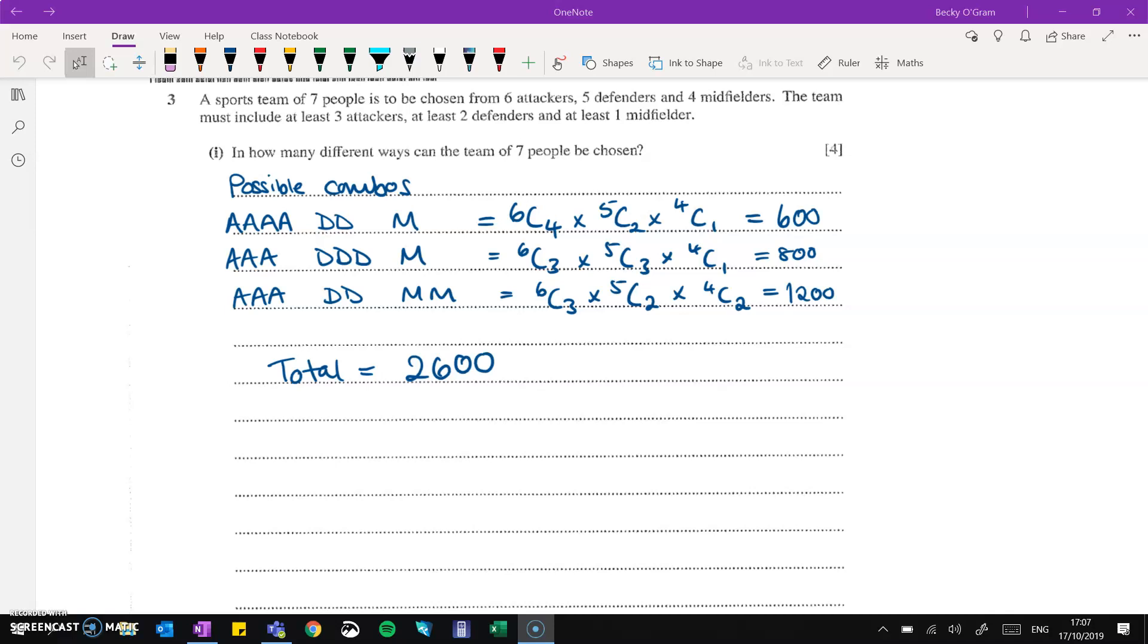Question three, we've got another thing about arrangements. With permutations and combinations. So we've got seven people being made as a team. We can choose from six attackers, five defenders, four midfielders. But we must have at least three attack, two defense and one mid. So then what I've started to think about is the possible combinations that we could do. So three attack, two defenders and one midfielder means that we've already taken up six of the spots. We just need to fill in the last spot. So we could either fill in an extra attacker, an extra defender or an extra midfield to those six. Each of those possible options we need to work out separately. So if we had four attackers, we would be choosing four from the six possible. Then two defenders from the possible five and one midfielder from the possible four. Those are combinations because it doesn't matter what order we pick them in. And that comes to 600. Follow the same process for the other two options and then add them together to get 2,600 possible ways to make that team.